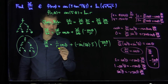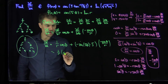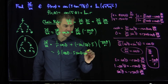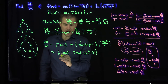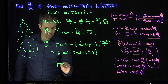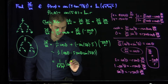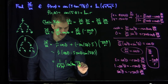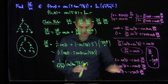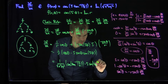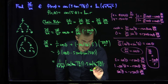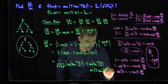Simplifying, this whole thing becomes (1/r) times the quantity cosine theta minus 5 sine theta sine 5 theta. Switching back to x and y, this is 1 over the square root of x squared plus y squared, times the quantity cosine of arctan(y/x) minus 5 sine of arctan(y/x) times sine of 5 arctan(y/x).